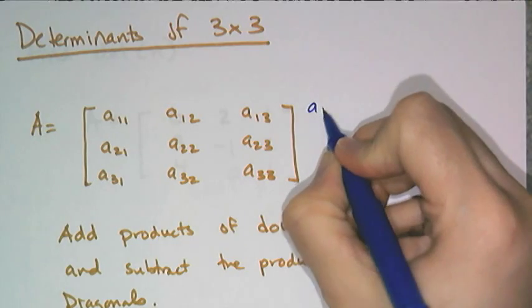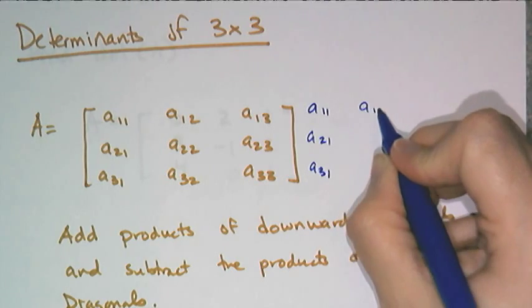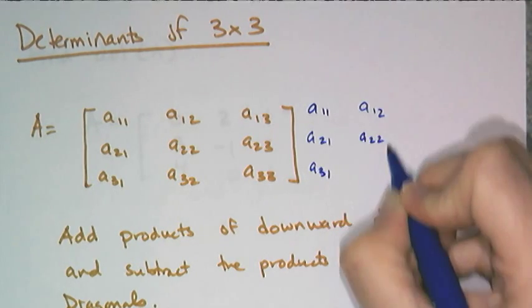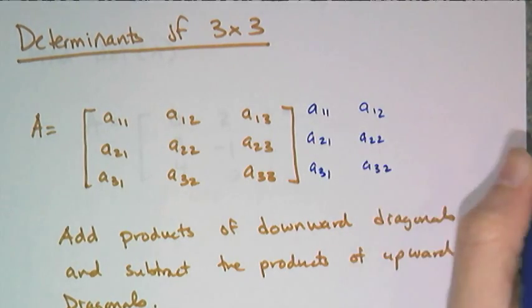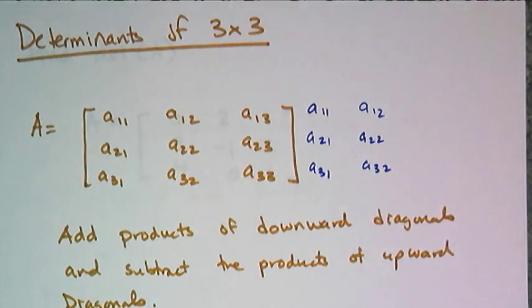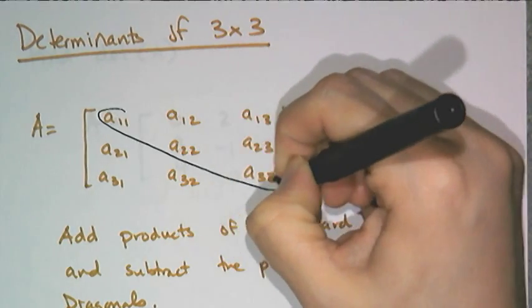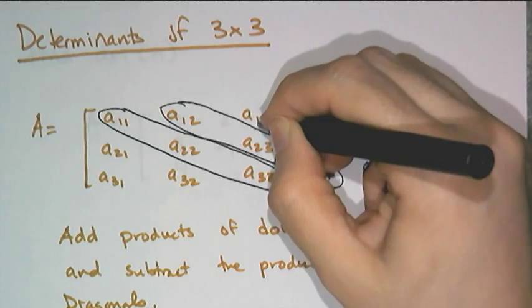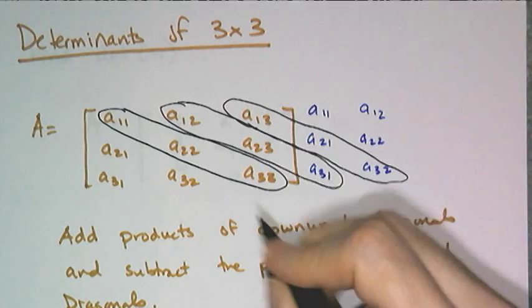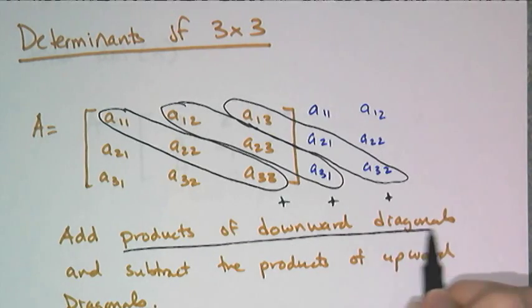You create more diagonals by rewriting the first two columns over here. So A11, A21, A31, A12, A22, and A32. So just by repeating the first two columns over here, I create the number of diagonals that I need. And I need three diagonals that are going downward. So I'm going to multiply this set of numbers, this set of numbers, and then that set of numbers, and add them together. So those are the products of the downward diagonals.